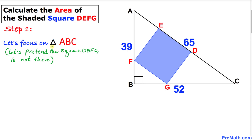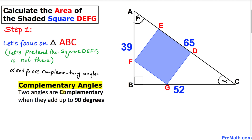Here is our very first step. Let's focus on this right triangle ABC and ignore the square inside. I am going to call this angle alpha, this angle beta, and this is 90 degrees. We know the sum of angles in a triangle is 180 degrees, so alpha plus beta equals 90 degrees — they are complementary angles. Two angles are complementary if they add up to 90 degrees.